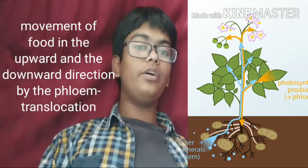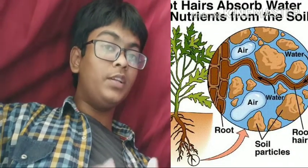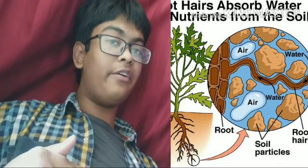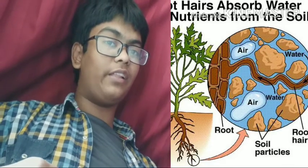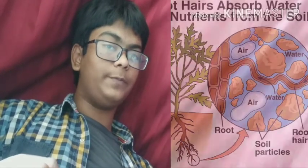This movement of food by the phloem is called translocation of food. Now let us learn about how water is absorbed by the roots. Water is the raw material for photosynthesis. This water has to be absorbed by the roots. The root is the main structure and it divides into lateral roots, which re-divide into root hair.